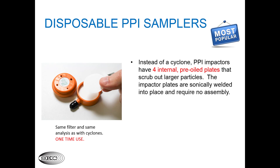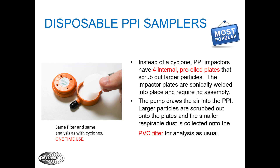Here's how PPIs work. The PPI impactors have four internal pre-oiled plates that scrub out larger particles drawn into the device by the pump. The impactor plates are sonically welded into place by SKC and require no assembly by you. As the pump draws the air into the PPI, larger particles are scrubbed out onto the plates and the smaller respirable particles are collected on the filter. The PPI samplers are designed for one-time use to ensure that the impactor plates do not become overloaded with dust. Tests indicate that the plates can hold up to 6.8 milligrams before they will no longer separate out the respirable dust particles.